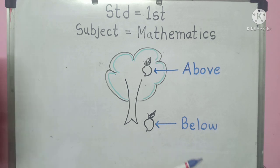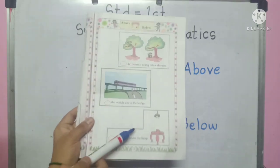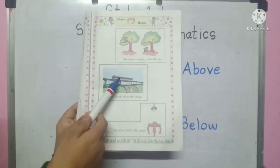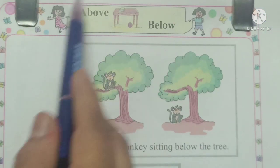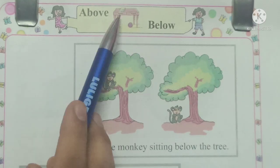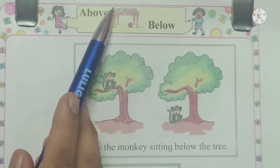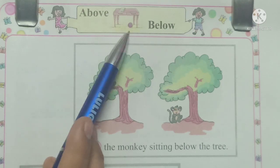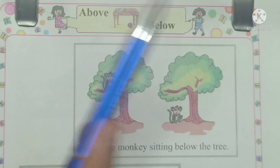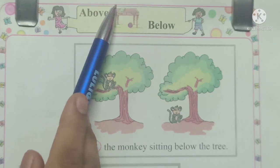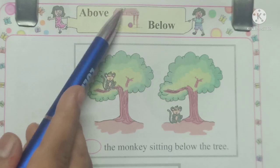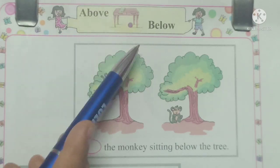Now let's do the questions from your textbook about above and below. Look at the textbook, students. Look here — you can see a table. There is a book and a ball. Now tell me students, where is the book? The book is above the table. Book table च्या वर आहे. The book is above the table.